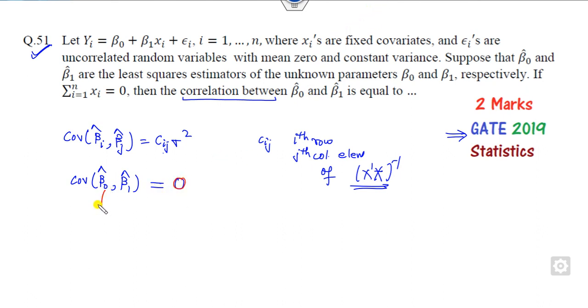This will be zero provided beta_0 equals the mean of y. Remember, this value is always zero if beta_0 is the mean of y, regardless of the value of beta_1. So our target is to check what the value of beta_0 is.